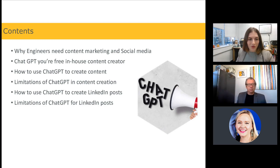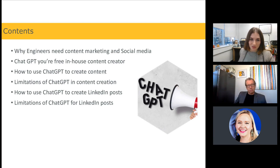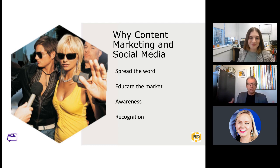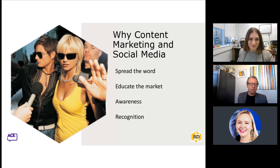A quick overview of today's session: we're going to talk through some examples of how you can use ChatGPT for content creation and also for social media, and the all-important limitations if you do choose to use it. But before we get into ChatGPT and artificial intelligence, why do we actually need content marketing and social media? Realistically, we need to spread the word. People need to know what you do — your personal brand, your firm brand, your awareness of services — to educate the market. Content marketing and social media are now pillars of every marketing strategy.